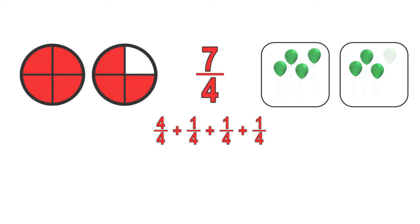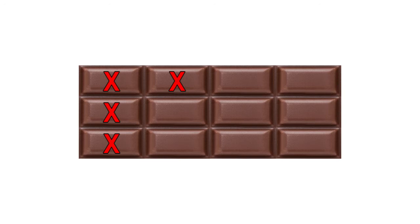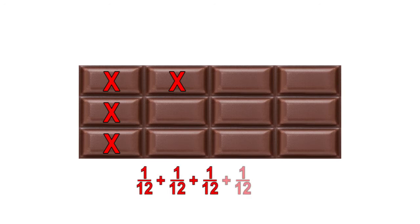We can also decompose fractions represented in real-world scenarios. For example, this bar of chocolate is divided into twelve pieces, four of which are marked with a red X. The fraction represented with the red X's is four-twelfths, as we have four one-twelfth sized pieces. Decomposed into unit fractions, we would add one-twelfth four times to equal four-twelfths. Each one-twelfth in the equation represents a single piece of chocolate marked by an X.